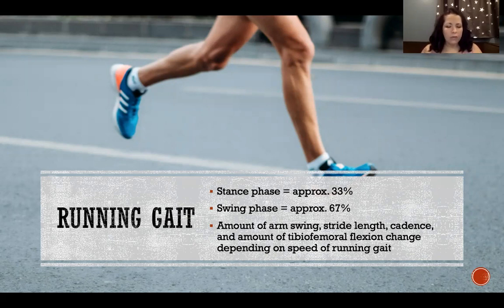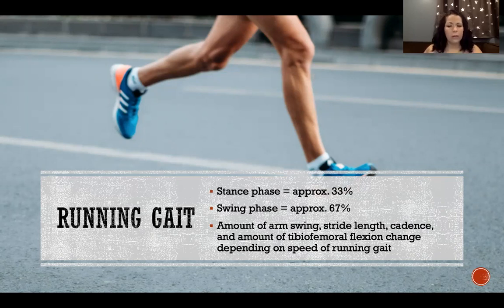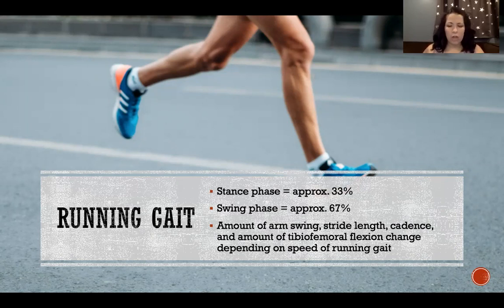In running, where we have swing phases that overlap with each other, we have a lot more swing time or air time than we do stance, whereas in walking gait we have stance that overlaps so we have a lot more stance time. The amount of arm swing, stride length, cadence, and the amount of knee flexion — tibio-femoral flexion — all change depending on the speed of running gait.